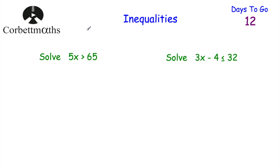Next inequalities: solve 5x is greater than 65, and solve 3x minus 4 is less than or equal to 32. Press pause now and solve these inequalities.